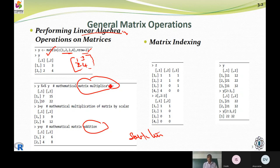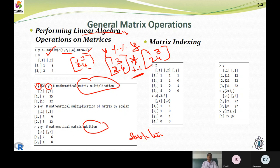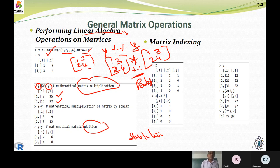For matrix multiplication, we use the double percentage symbol (%%). For example, matrix y with elements one, two, three, four multiplied by matrix one, three, two, four using %% gives the result seven, fifteen, ten, twenty-two. This is how we perform matrix multiplication operations.